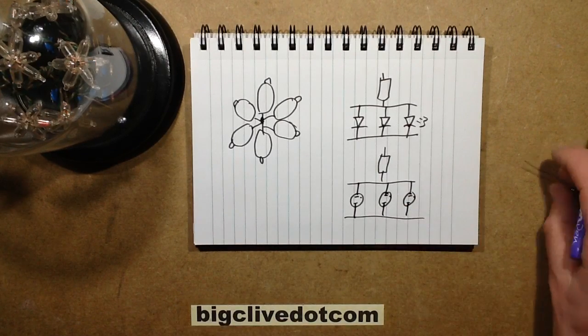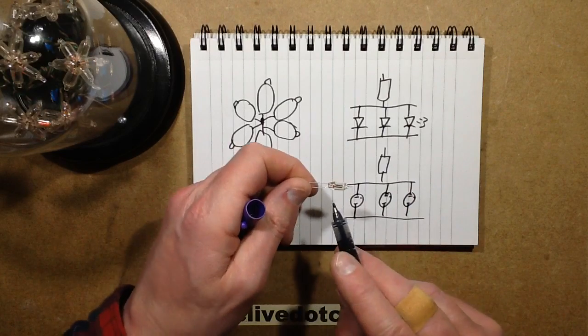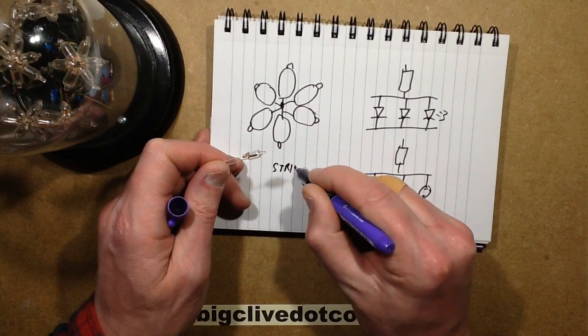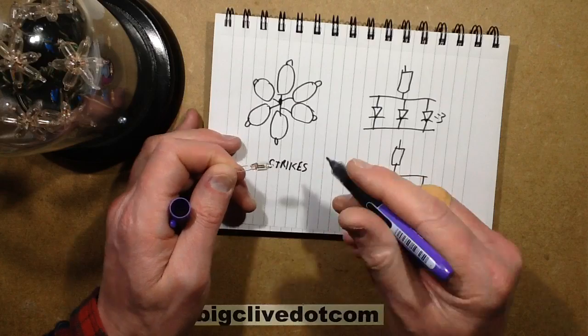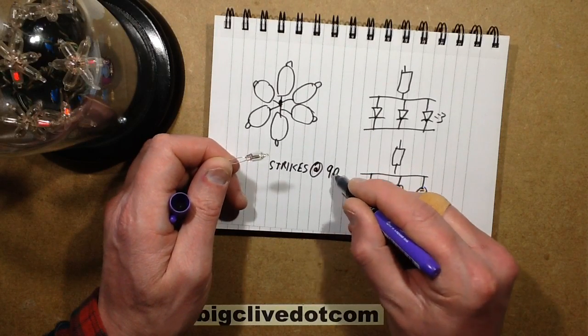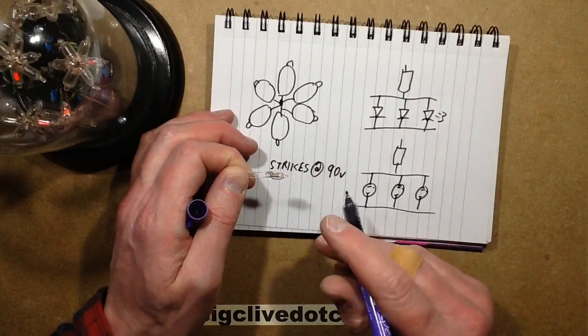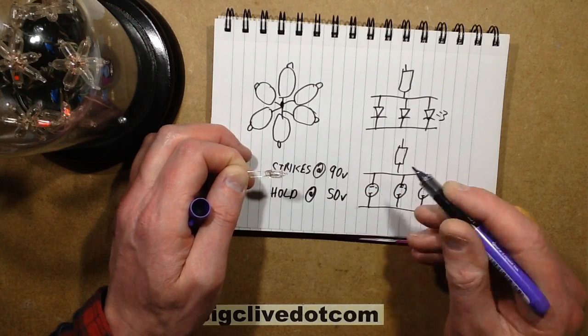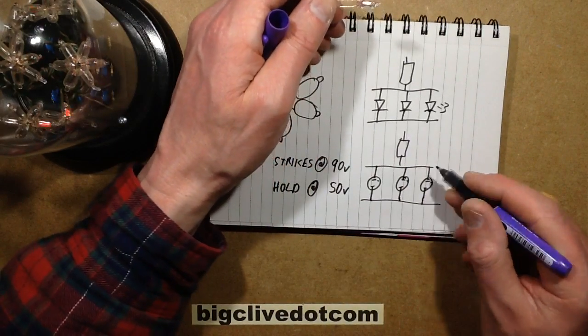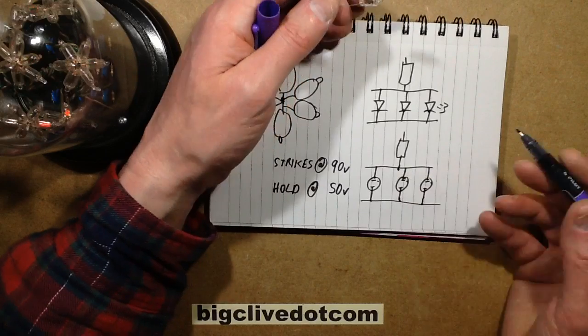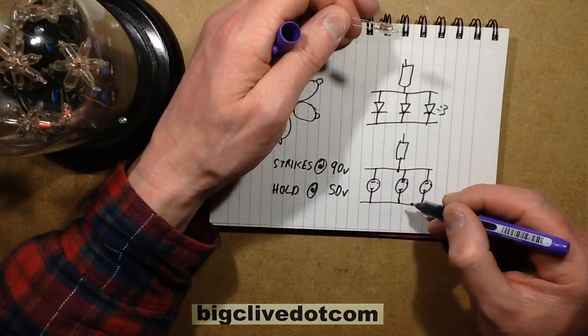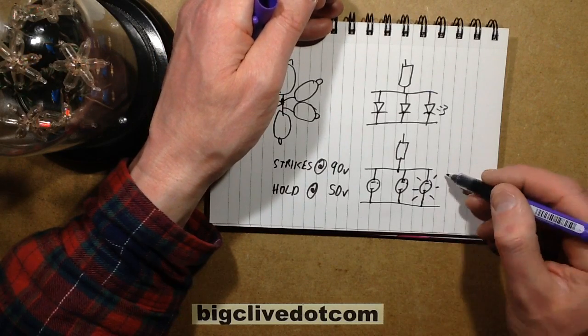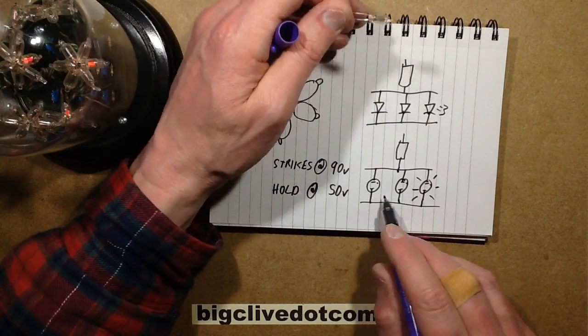What actually happens with neons is that this neon lamp will not light until the voltage exceeds about 90 to 100 volts. As soon as it strikes, that just means it lights up at 90 volts, and once it's reached 90 volts the voltage then drops, we'll call it hold, at about 50 volts, 50 to 60 volts. So what actually happens when you've got one resistor feeding a load in parallel is the first one that lights, the voltage rises up to about 100 volts and one of them strikes. If this one strikes, then it clamps the voltage down and you'll only ever really get one lit.